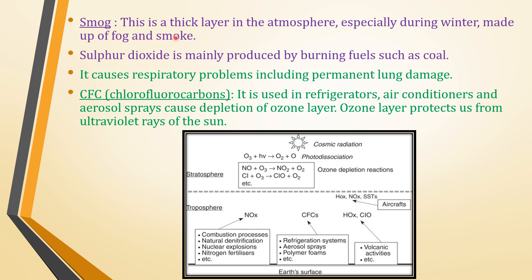Smog is a thick layer in the atmosphere, specially during winter, made up of smoke and fog. Sulfur dioxide is mainly produced by burning fuels such as coal. It causes respiratory problems including permanent lung damage.